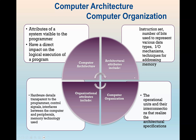Computer organization refers to the operational units and their interconnection that realize the architectural specifications. An example of architectural attributes includes the instruction set and the number of bits used to represent various data types, such as numbers or characters, as well as I/O mechanisms and techniques for addressing memory.